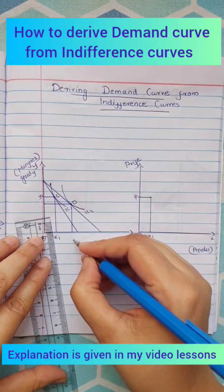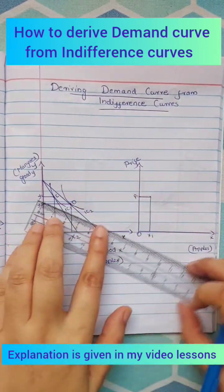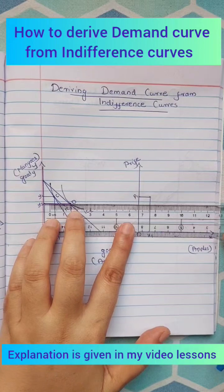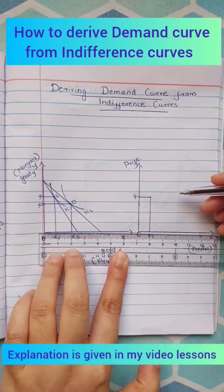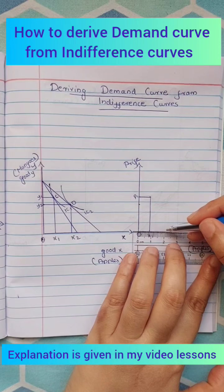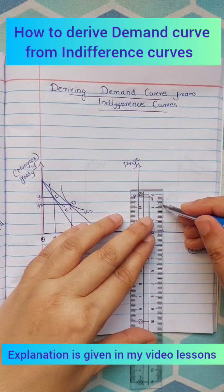Where she buys more apples—x2 quantities of apples—and less mangoes, y2 quantities of mangoes. When the price of apples decreases, she will substitute apples for mangoes.